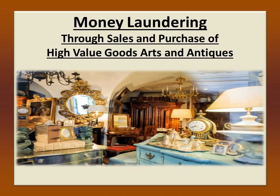Let us understand money laundering through sales and purchase of high-value goods, arts and antiques. Criminals and launderers find it easy to convert illicit money to clean money through the purchase of high-value goods, arts and antiques, and then selling them in open and legal markets. Launderers use chains of dealers and auction houses to conduct transactions that make the illicit money appear to be legal.